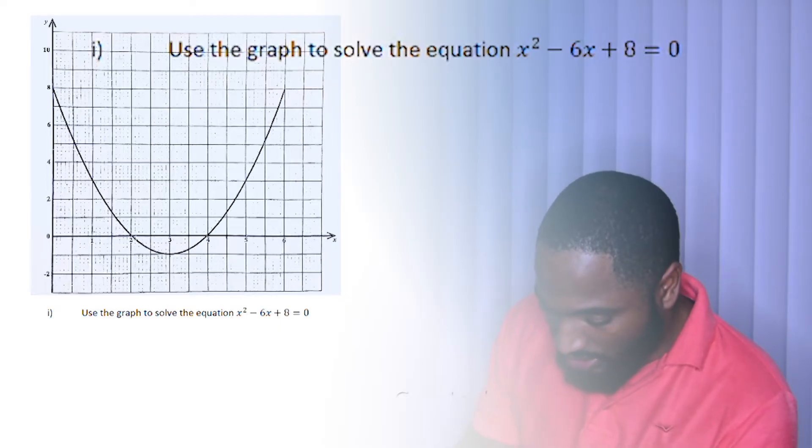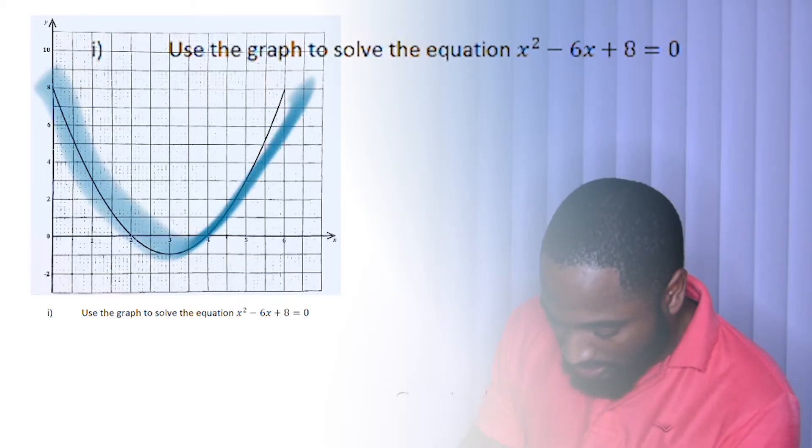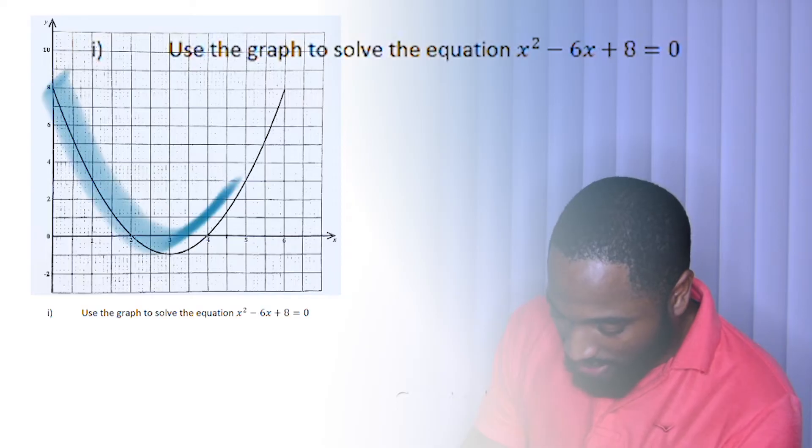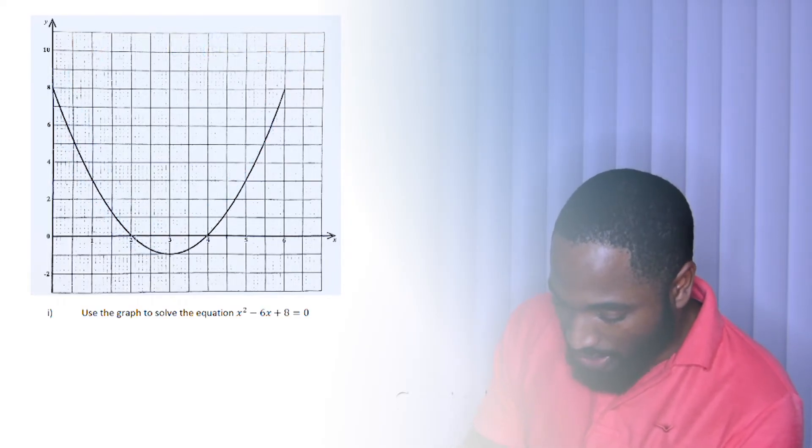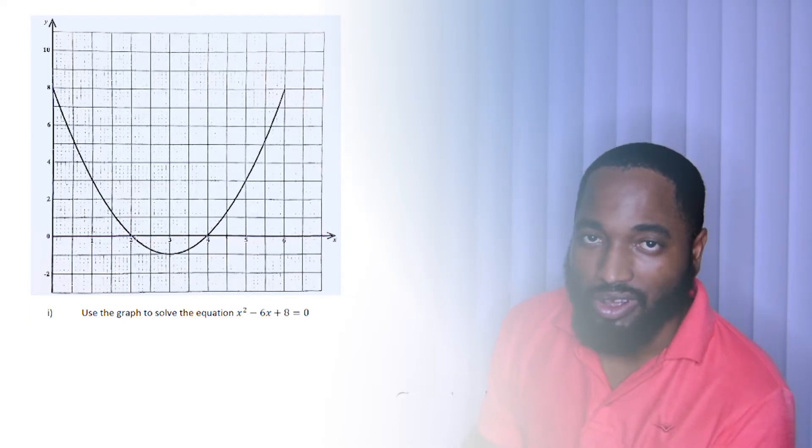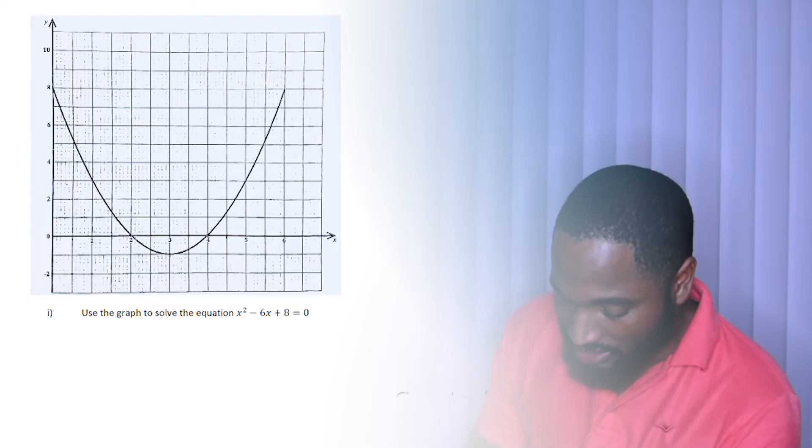So we're going to do here. This is the graph x² - 6x + 8. Actually, this is the graph x² - 6x + 8, and we want it where it's equal to 0. Where is this going to be equal to 0? Right here and right there. Because this line here represents y = 0, which is also known as the x-axis. So we're just going to use those two values. That's when x² - 6x + 8 is equal to 0.